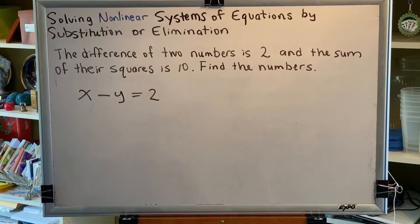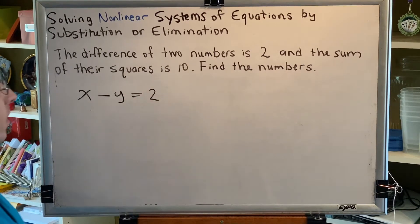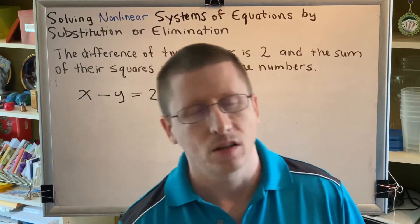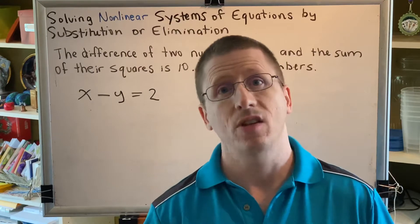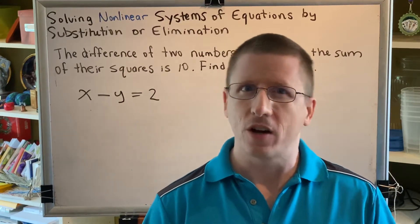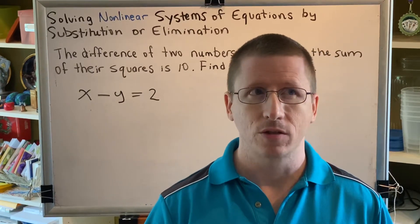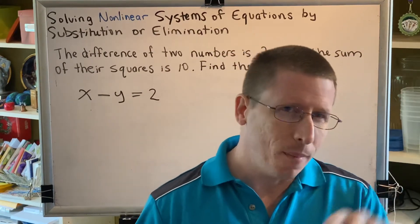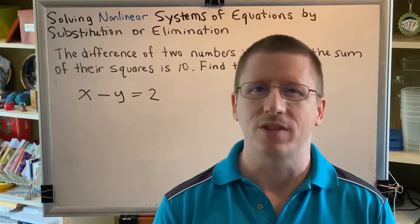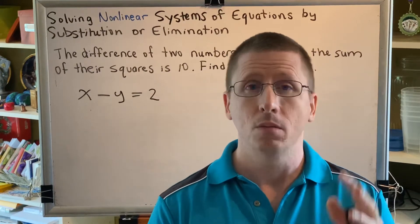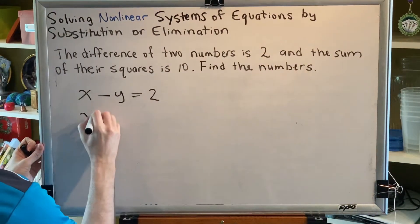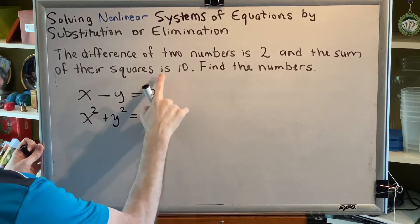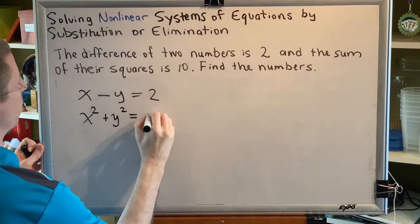The next part of the sentence says the sum of their squares is 10. Now let's think about that. The sum of their squares. Who are they? Well, that would be x and y. So their squares must mean x squared and y squared. And then, because it says the sum of their squares, that must mean that we add those things together. So x squared plus y squared is 10, or equals 10.